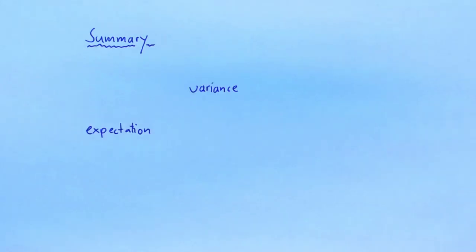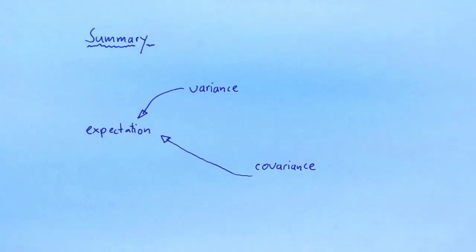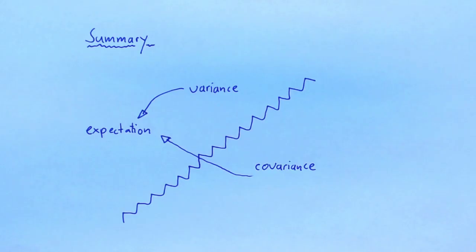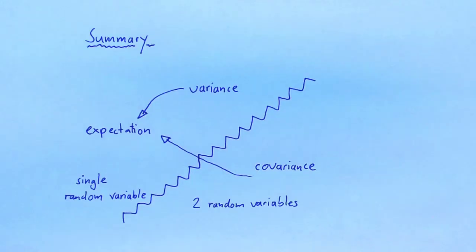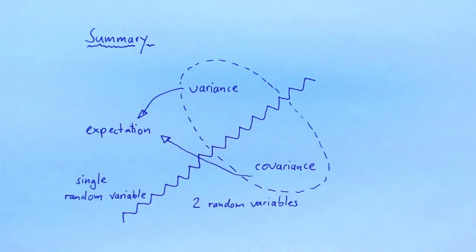Let's summarize what we've learned. We have discussed the expectation, the variance, and the covariance. They all condense certain aspects of the behavior of random variables into a single number. The variance and the covariance are both special kinds of expectations. The expectation and the variance both describe properties of a single random variable, while the covariance describes the relationship between two random variables. As you might have guessed from the names, the variance and the covariance are related: it is not hard to show that the covariance of a random variable with itself is its variance.